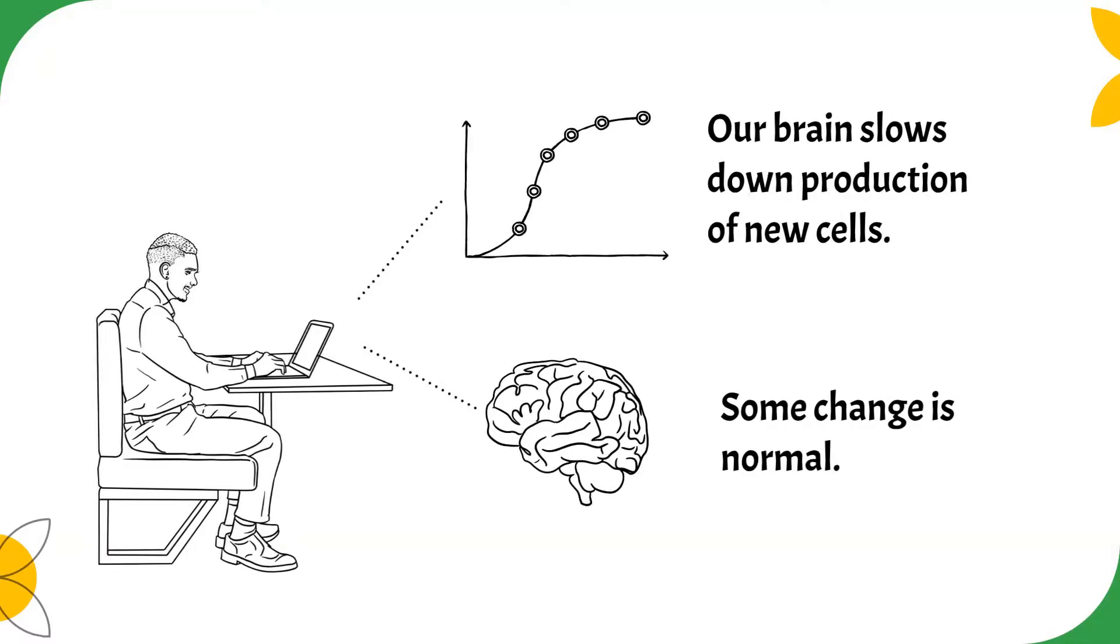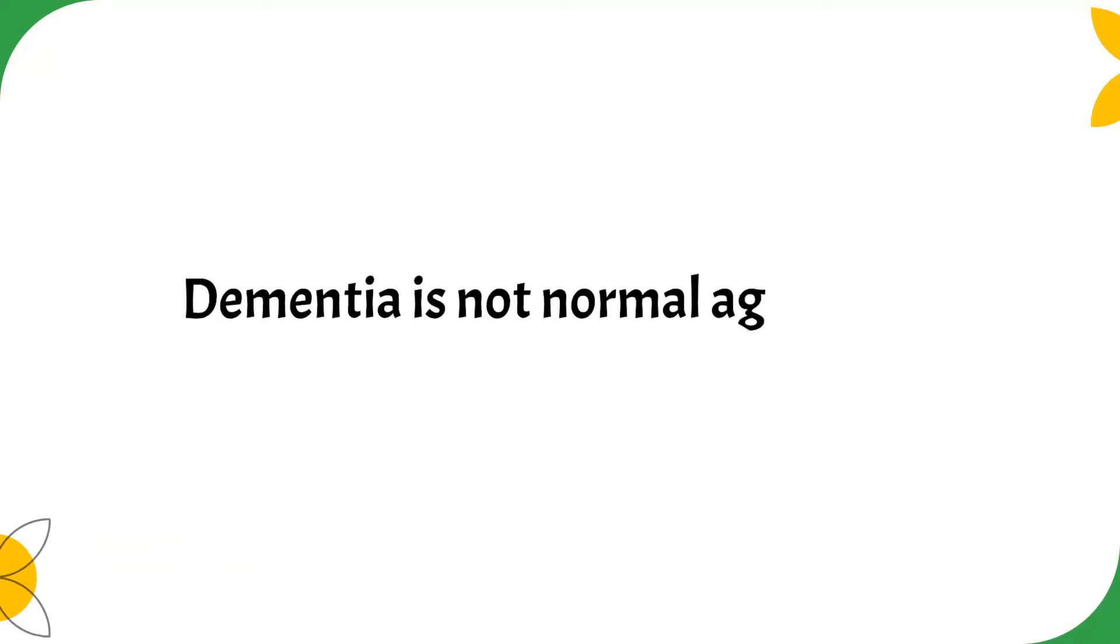Ideas might not come to you as quickly. You might not remember names or important dates as well as you once did. But in general, some cognitive loss is normal. But dementia is not normal aging, and it is behavior that goes beyond simple forgetfulness.